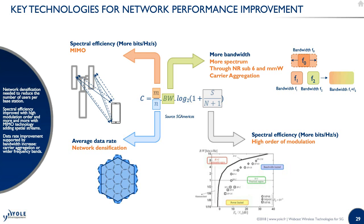To manage improvements in spectral efficiency, two schemes are being employed. The first is high-order modulation: 256 QAM is the most common modulation today and will remain so for a while. The second is MIMO technology — employed as 2x2 transmit-receive paths previously, but now 4x4 is well employed by most players.